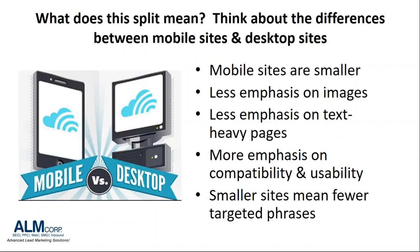What does this split mean for us as marketers and online marketers? The focus is now going to be on smaller mobile sites. We aren't going to have a page per keyword for 50 keywords on a site anymore. A mobile site is technically very slimmed down and narrow - you're going to have five pages on your mobile site compared to 50 on your desktop site. Optimizations on your mobile site need to be much more streamlined.